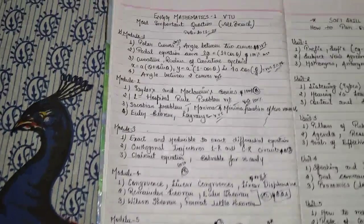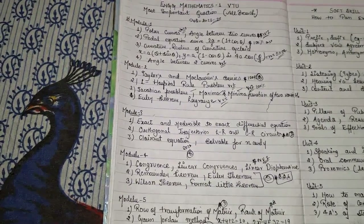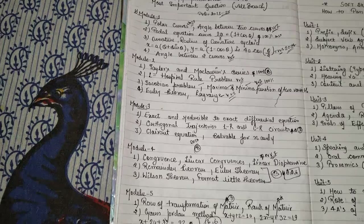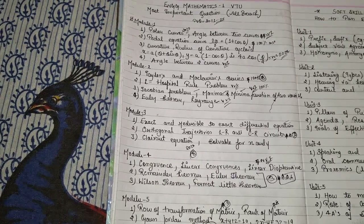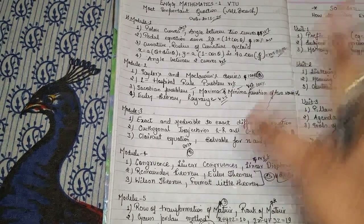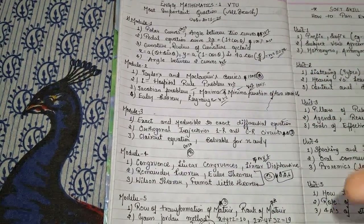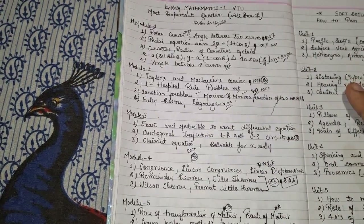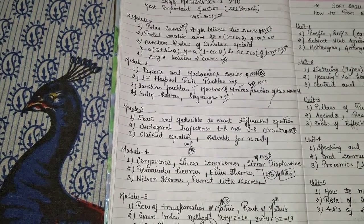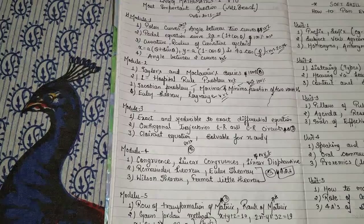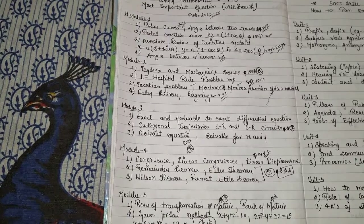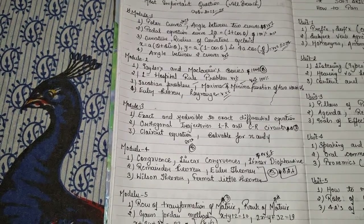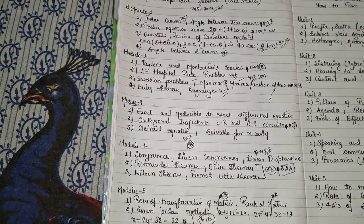These are the most important questions for Modules 1 to 5 for BTU Karnataka universities engineering mathematics, for all branches — civil, mechanical, electrical, and computer science. I hope you liked the video. Please subscribe to my channel Technical Rajpur Blog for more subjects like physics, chemistry, and upcoming videos. Thank you for watching.